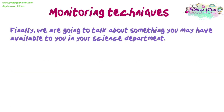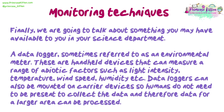We are also going to talk about data loggers, sometimes referred to as environmental meters. These are handheld devices that can measure a range of abiotic factors, such as light intensity, temperature, wind speed, and humidity. Data loggers can also be mounted on carrier devices, so humans do not need to be present to collect the data, and therefore data for a larger area can be processed.